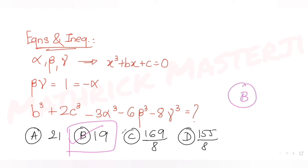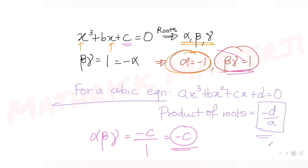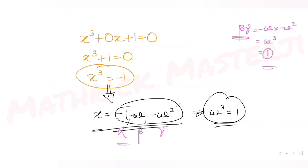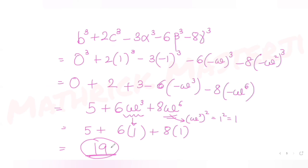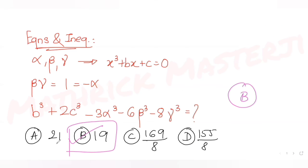I hope you have understood how to solve this type of question dealing with equations. We figured out the values of b and c, then got our three roots, substituted into the expression, and got the answer as 19, which is option B. I'll see you again tomorrow with another question from our JEE Mains series.